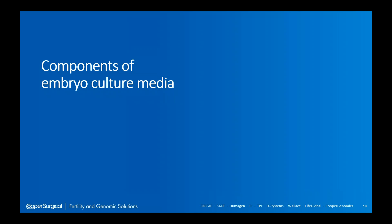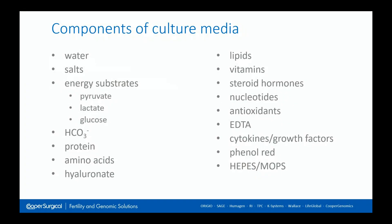Let's talk about components of embryo culture media. The ones you'll see in culture media include water, salts, energy substrates, and so on. I'm going to talk primarily about the key ones: energy substrates, bicarbonate and buffers, proteins, amino acids, and hyaluronate. You can get additional components like lipids, vitamins, steroids, nucleotides, EDTA, cytokines and so on. Depending on the culture medium you use, there'll be various combinations of those, but the principal building blocks will be energy substrates, bicarbonate and buffers, and amino acids.